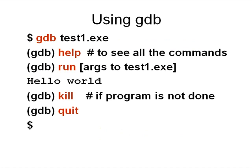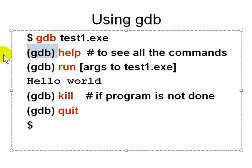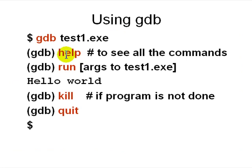To use GDB, in the command prompt (bash or cmd) you type gdb and the executable name, which has the debug information in it. At the GDB prompt you can type help to see all the commands, or look at the GDB manual by typing man gdb, or just search gdb in Google to read the full manual.